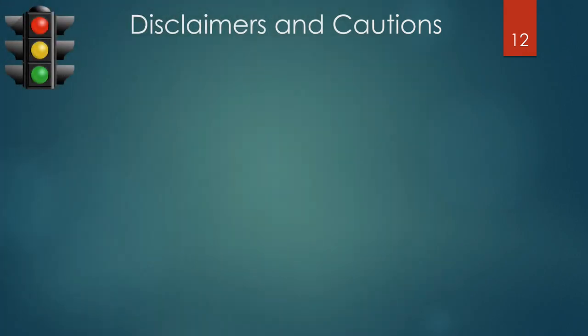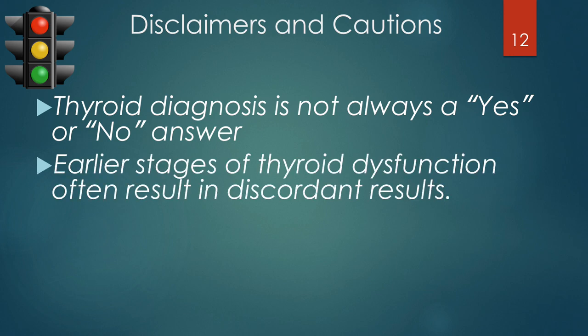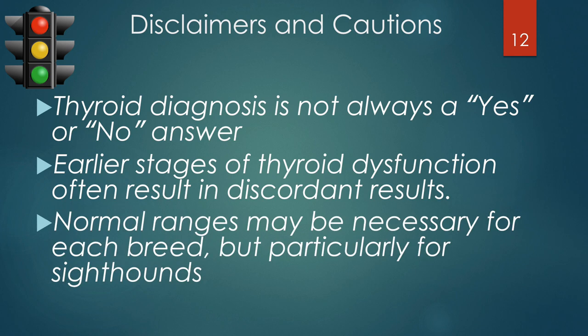A few disclaimers and cautions regarding diagnostic tests for thyroid hormone: we don't always get a yes or no answer. Earlier stages of thyroid dysfunction often lead to discordant results, meaning you might get a low T4 but a non-elevated TSH, or an elevated TSH but a non-low total T4 or free T4. We also need to be aware that there probably needs to be normal ranges for each breed, because certain breeds — particularly the sighthounds — have very low thyroid hormone values but are not hypothyroid. This is a normal reference range issue.